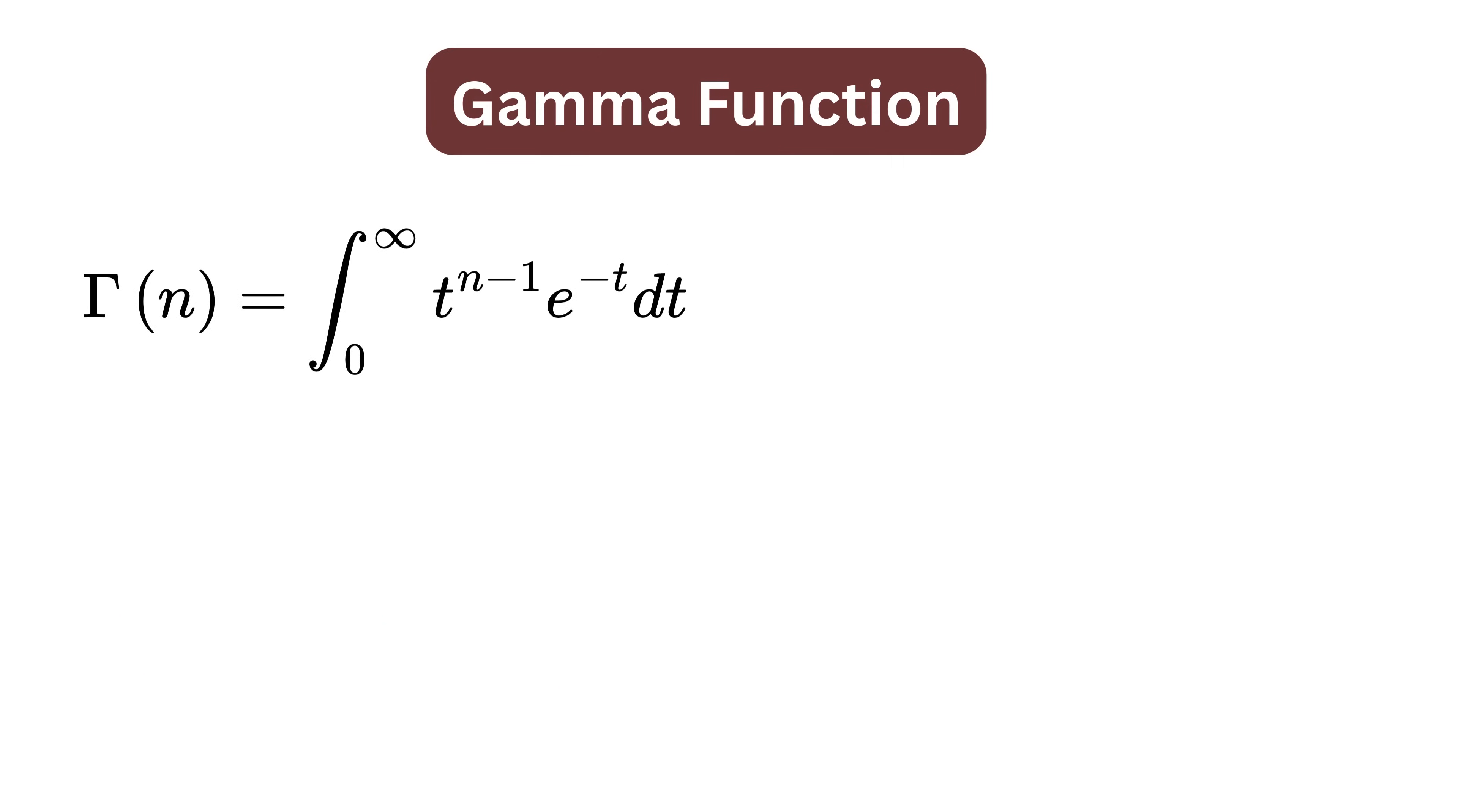One of the most fascinating results of the gamma function is when we plug in 1 half. Gamma of 1 half is equal to the square root of pi. That's right, gamma of 1 half equals root pi, which connects factorials to geometry in a very surprising way.